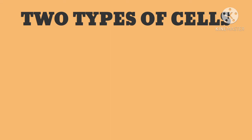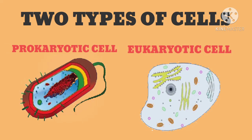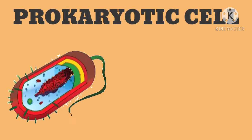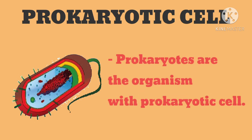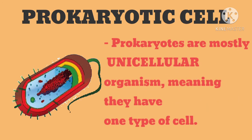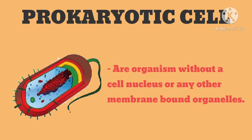There are two types of cells: the prokaryotic cell and the eukaryotic cell. Ang unang muna nating pag-usapan ay ang prokaryotic cell. Prokaryotes ang tawag sa organism na may prokaryotic cell. Ang mga prokaryotes ay mga organism na unicellular — ibig sabihin ng uni ay isa — meron silang isang klaseng cell lamang sa katawan. Ang prokaryotic cell ay ang cell na walang nucleus.